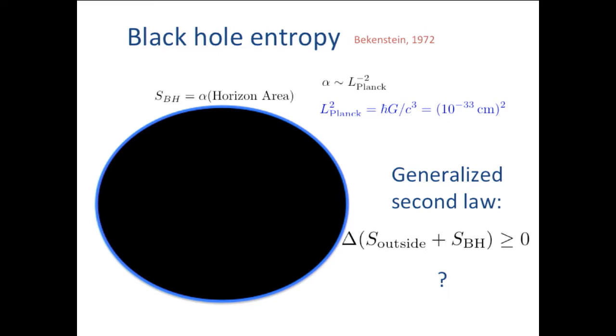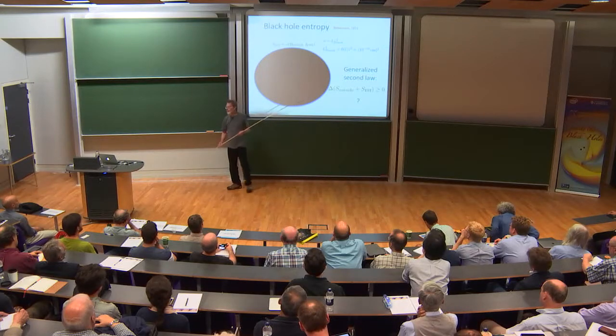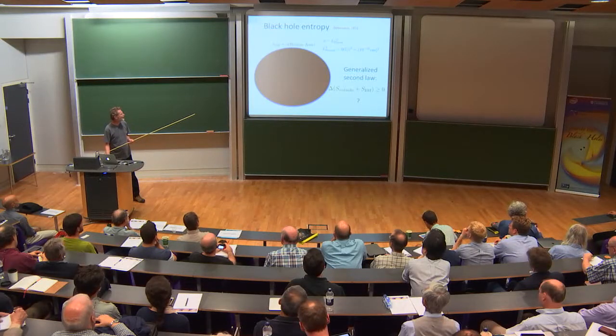The coefficient, he reasoned, should be one over Planck length squared times some numerical constant. And he proposed a generalized second law, which is that although the entropy outside can go down, if you add to it this black hole entropy, then the sum could never go down. So the change must be non-negative.